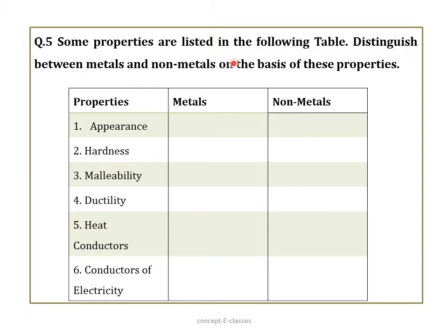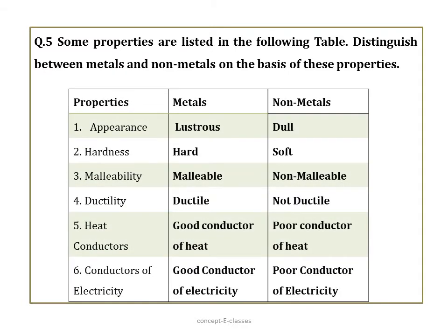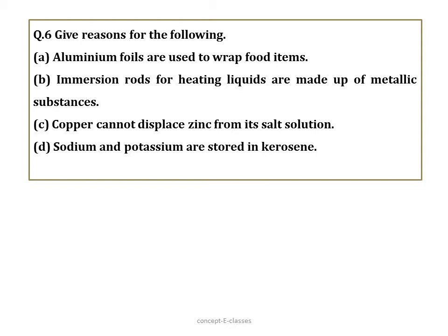Question number five: distinguish between metals and non-metals based on the following properties. Appearance: metals are lustrous/shiny, non-metals are dull. Hardness: metals are hard (except sodium and potassium), non-metals are soft. Malleability: metals are malleable, non-metals are not. Ductility: metals are ductile, non-metals are not. Heat conductivity: metals are good conductors, non-metals are poor conductors. Electrical conductivity: metals are good conductors, non-metals are poor conductors.